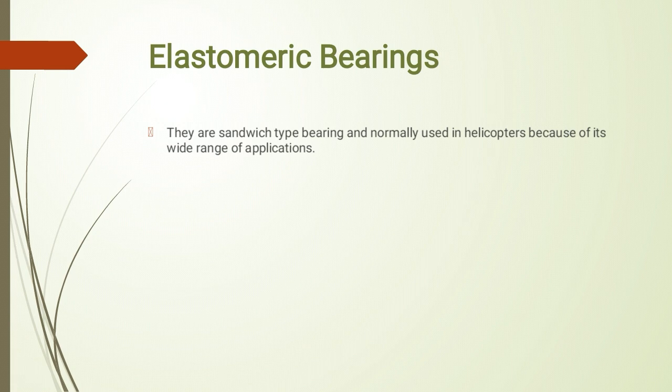Elastomeric bearing is a bearing that uses both rubber and metal together. Unlike conventional bearings which involve only metal, elastomeric bearings use rubber. With these bearings, lubrication requirement is eliminated because the rubber itself behaves elastically. So the first point is: they are sandwich type bearings, and are normally used in helicopters because of their wide range of application.